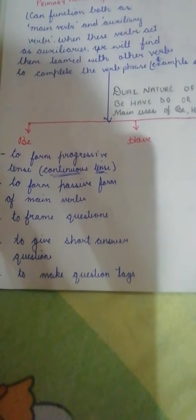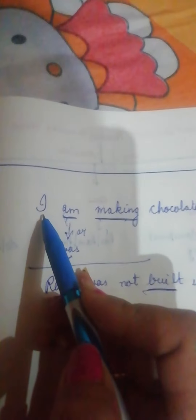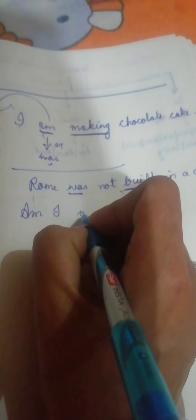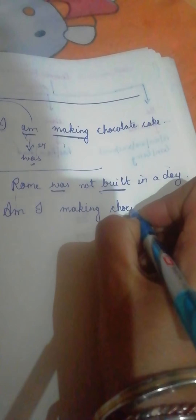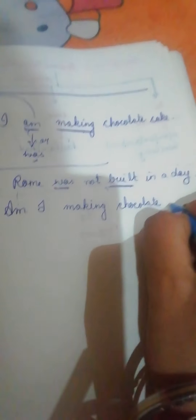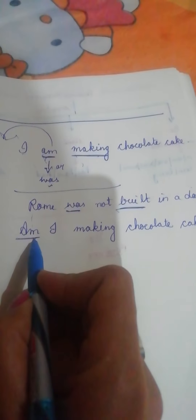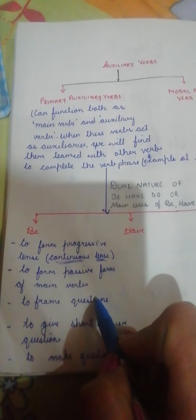The next use is to frame questions. For example, from the sentence 'I am making chocolate cake,' I can bring the auxiliary to the beginning to form: 'Am I making chocolate cake?' So the BE form is used to frame questions, and similarly other members of the BE family can be used to frame questions.